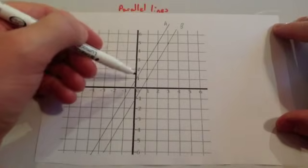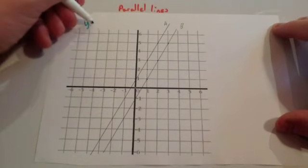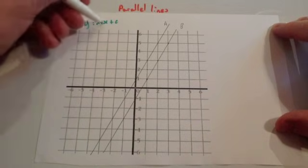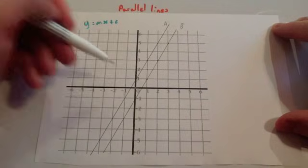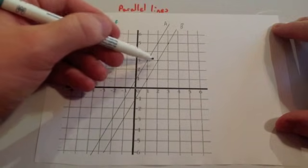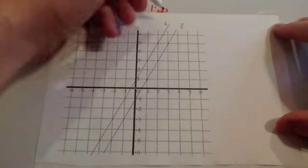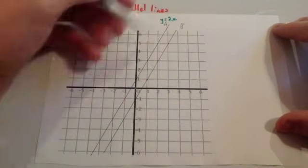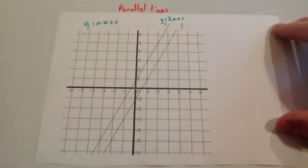So line A has got a gradient. Remember the equation is Y equals MX plus C, where M is the gradient and C is the Y-intercept. So let's look at its gradient. If you go across one, you've got two — across one, you've got two. So the gradient of this line is two. So it's Y equals 2X, and it crosses the Y-axis at one. So it's Y equals 2X plus one.